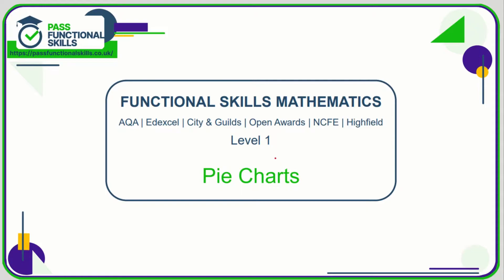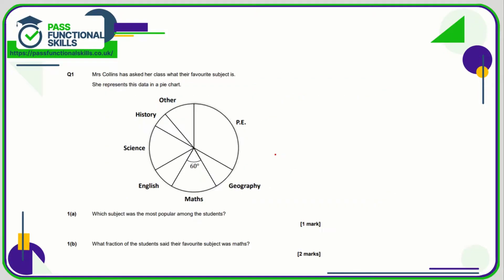Let's take a look at the pie chart questions. You can use a calculator for all of these if you need to. Question number one: which subject was the most popular among the students? All you're doing is looking for the biggest slice of the pizza, and that is clearly the PE slice, so PE was the most popular subject.